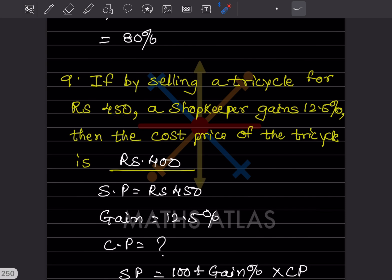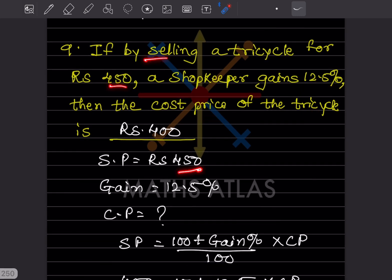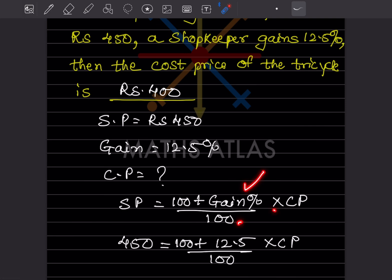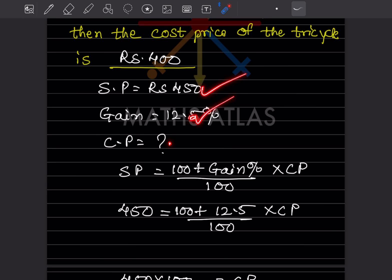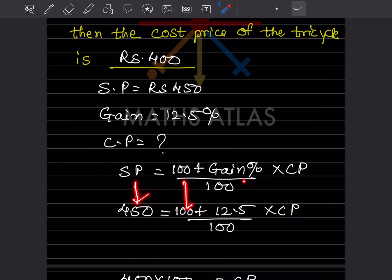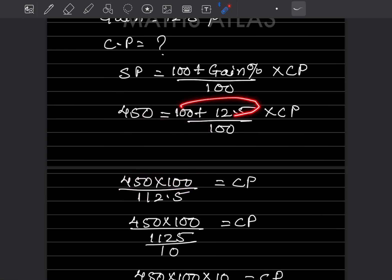If by selling a tricycle for ₹450 a shopkeeper gains 12.5%, find the cost price. The selling price is ₹450 and gain is 12.5%. We use the formula: SP = ((100 + gain%) / 100) × CP. Since SP and gain% are given, CP is the unknown. Substituting: 450 = (112.5/100) × CP.